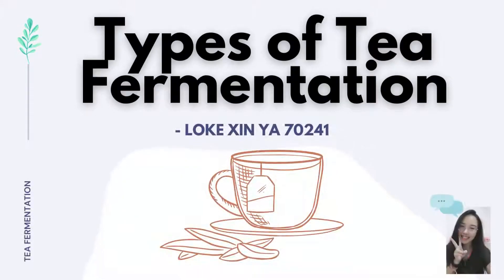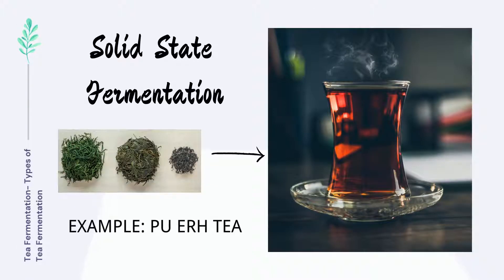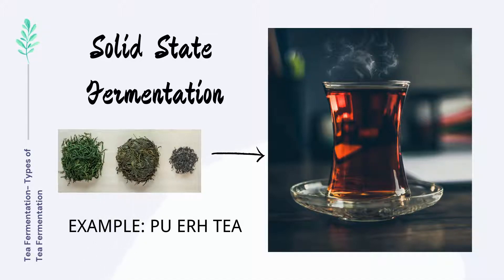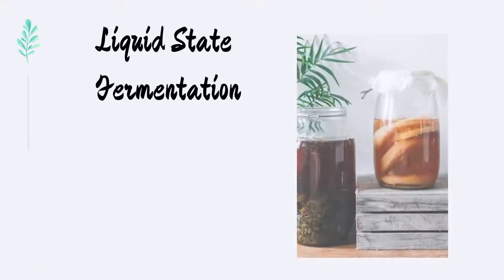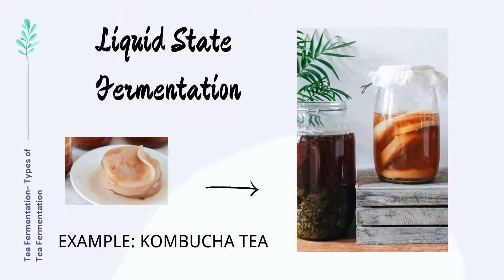There are two types of tea fermentation. First, solid state fermentation, which happens in the absent or low moisture condition, such as the fermentation of puerh tea leaf. The other type is liquid state fermentation, where a solid culture is fermented in liquid, such as kombucha tea.